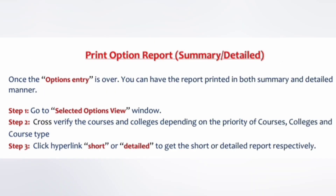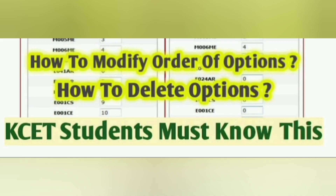The last step is you can print the option report. Whatever you have modified, added, or deleted in the mock round — after the mock round result — will be available for the first round option entry. You can take a printout of your option report. For example, from 8 options in the mock round, you may now have 12 — continuing with reordering and adding 4 new ones. So I have explained the complete option entry procedure: how to modify options, how to delete options, and how to take a printout. Thank you for watching — please like and subscribe for similar updates.